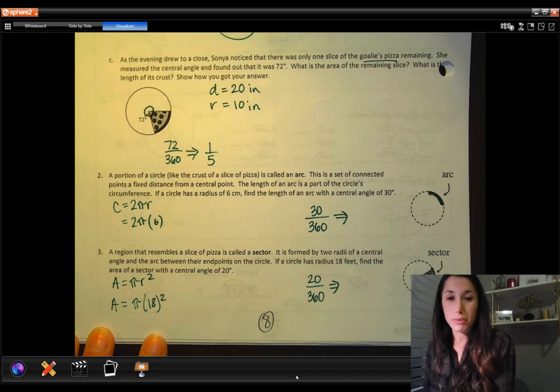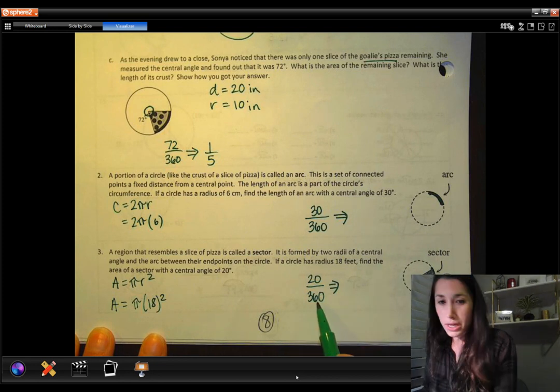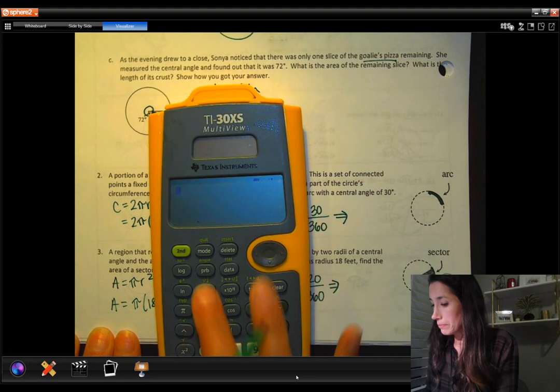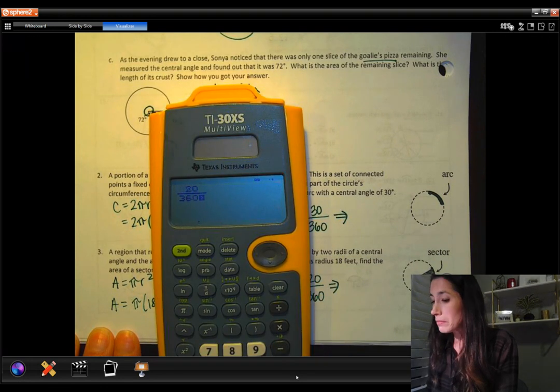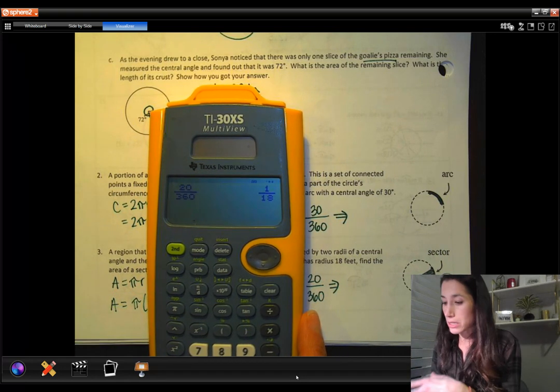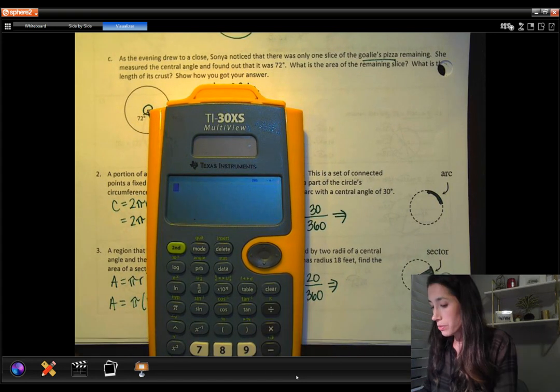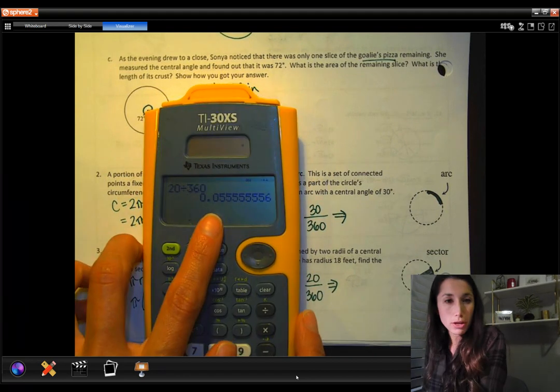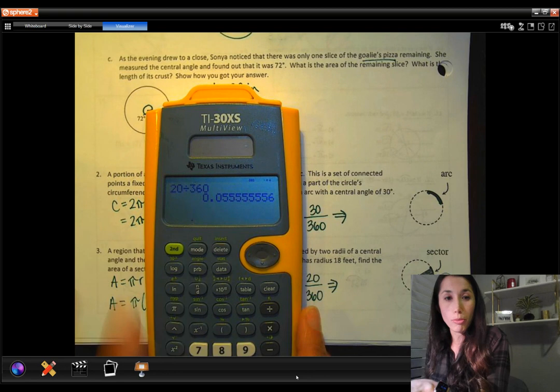So I can either take 20 out of 360 and I can write it as a fraction. So it's 1/18. I basically would have 18 of those slices on that pizza. Or I could take 20 divided by 360 and I could put it as a decimal. So it kind of depends on the way your calculator works, whatever you're more comfortable with.